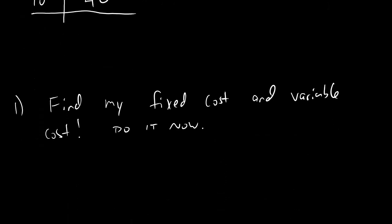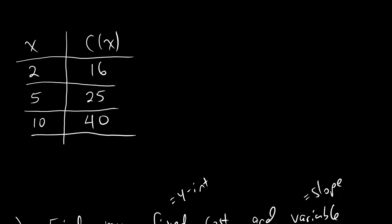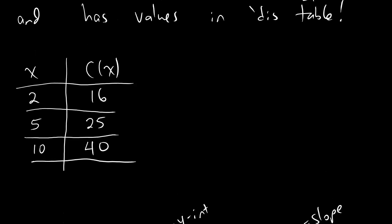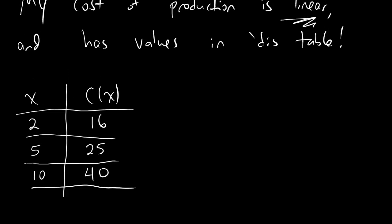So the first question that we're asked is, what is the fixed cost and what's the variable cost? Well, you may or may not remember that fixed cost and variable cost mean respectively, slope of the line and also y-intercept of the line. So if you see a problem in 1.4 asking you about fixed cost or variable cost, the thing you actually want to start off with is just finding the equation of the line. So here we've got some values and we also know that the cost of production is linear.